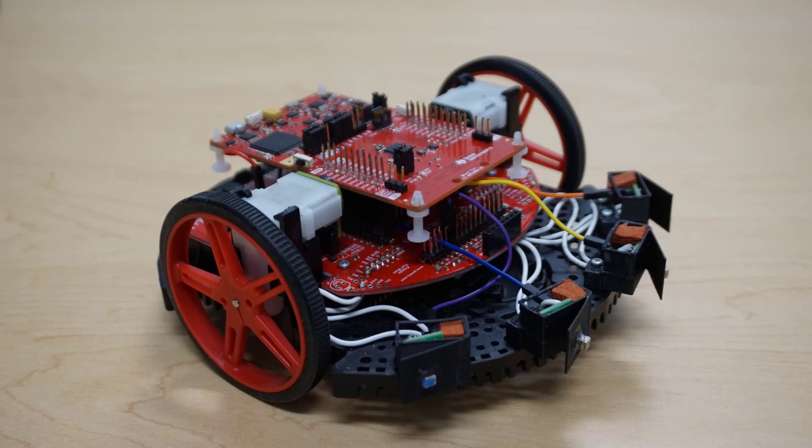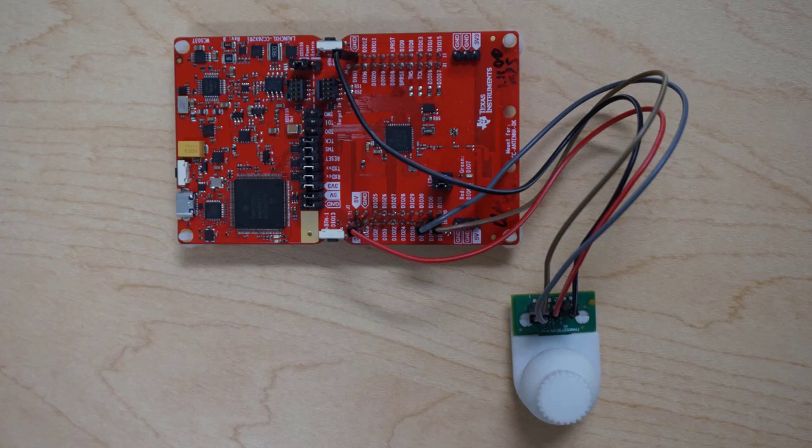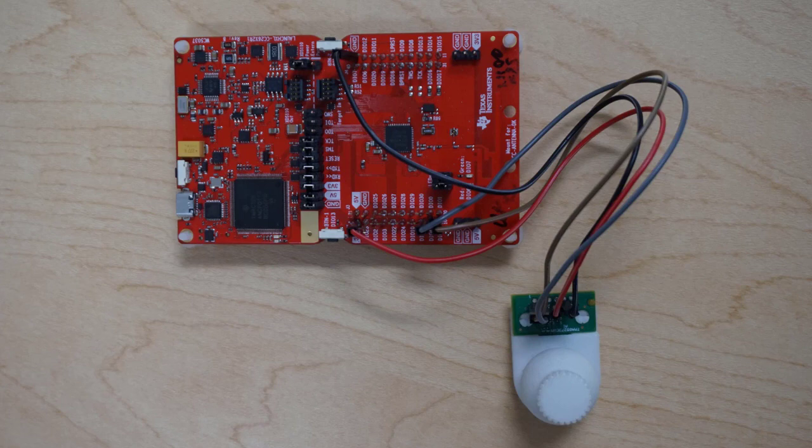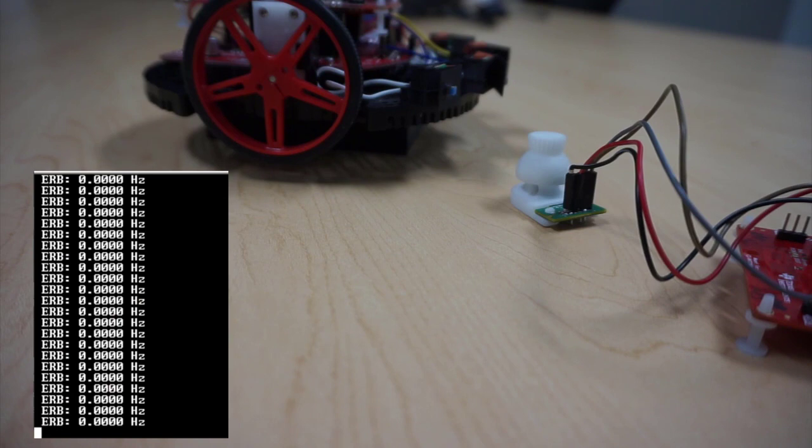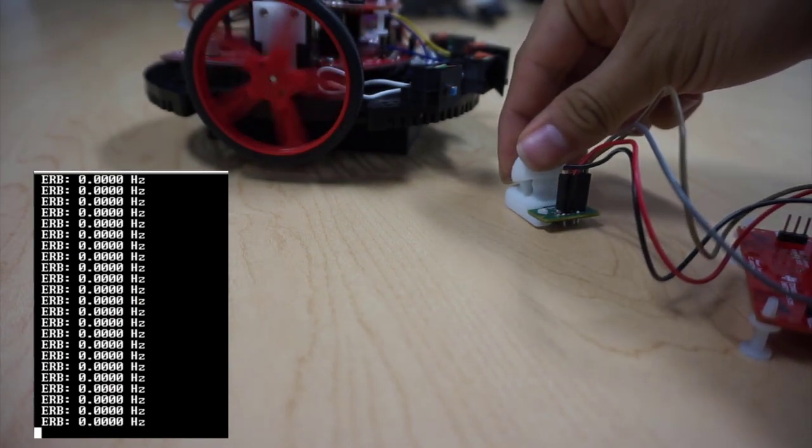It also uses Bluetooth Low Energy to communicate the robot's status wirelessly to another CC2652 R1 Launchpad module, which we have connected to the PC. The additional microcontroller allows us to print the status of the robot onto the terminal in real time while also enabling the use of a magnetic joystick to control the speed and direction of the motors.